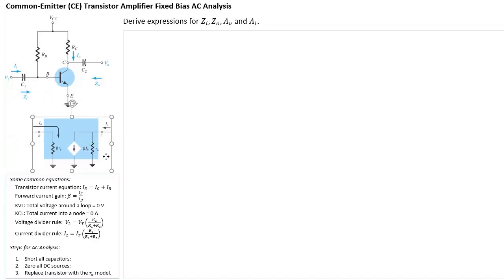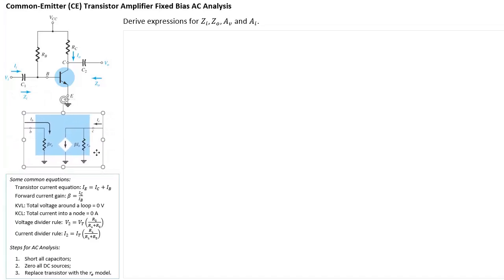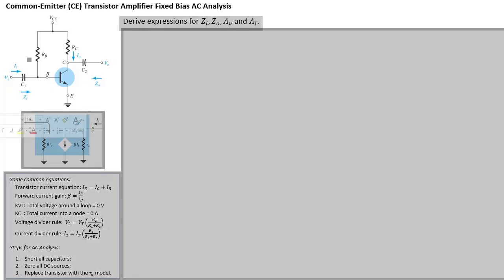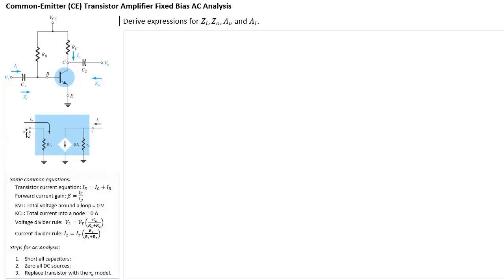Step three: we have to replace our transistor with one of the models. In this case, I'm using the RE model. Just to remind you, the RE model has the base side, the collector side, and the emitter side. It has beta RE, beta IB, and also RO. This is the RE model for a transistor in a common emitter arrangement.